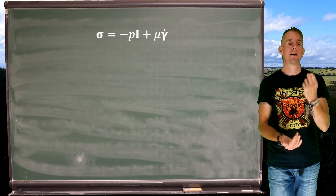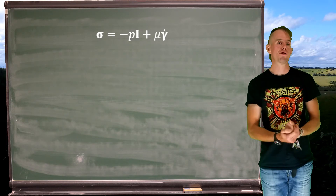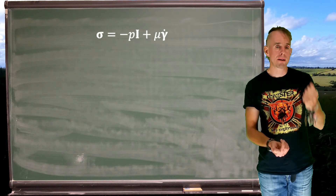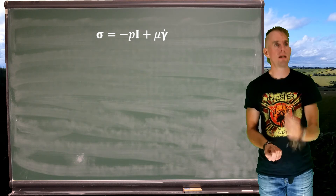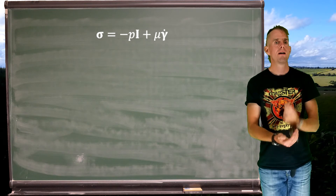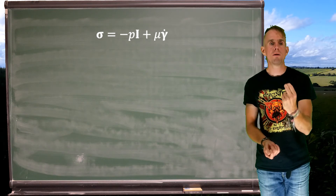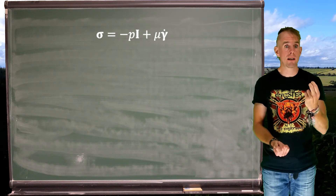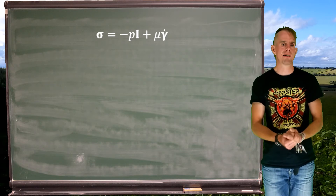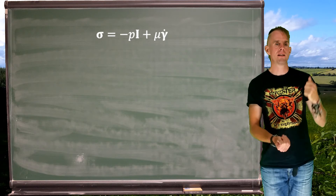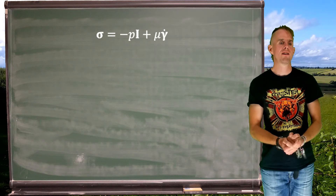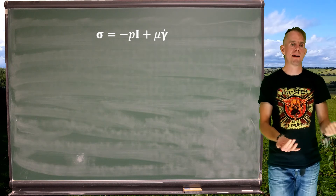So there we have it — my total stress. It's minus p (scalar) times I (the identity tensor), plus mu (also a scalar) times gamma-dot (my rate of strain tensor). This is dimensionally consistent, rank consistent, and symmetric.